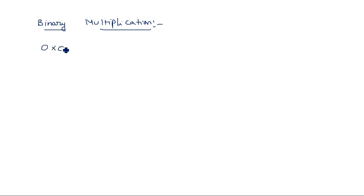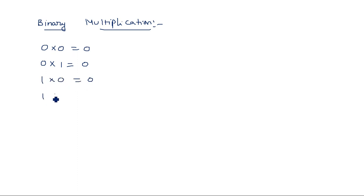The multiplication rules are: 0 times 0 is 0, 0 times 1 is 0, 1 times 0 is 0, and 1 times 1 is 1. Only 1 times 1 gives 1; everything else is 0. This is normal multiplication.